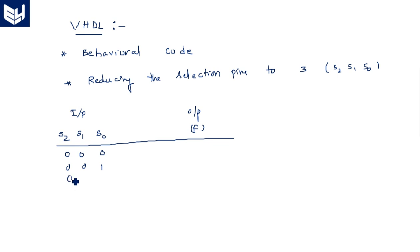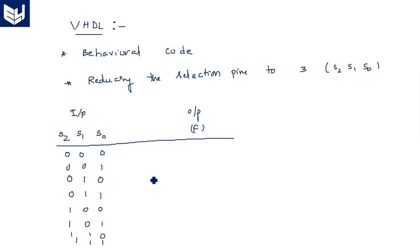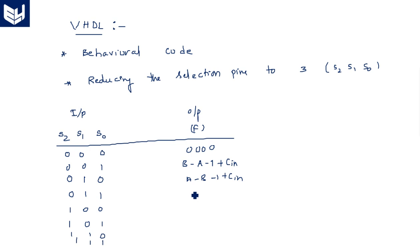The selection line combinations are: 000, 001, 010, 011, 100, 101, 110, 111. For 000, output F is zero. For 001, we perform the arithmetic operation B minus A minus 1 plus carry-in. For 010, we perform A minus B minus 1 plus carry-in. For 011, we perform A plus B plus carry-in. For 100, we perform A XOR B. For 101, A plus B (OR). For 110, A AND B. And for 111, all ones.